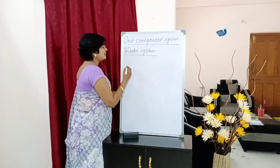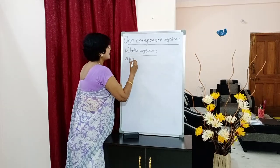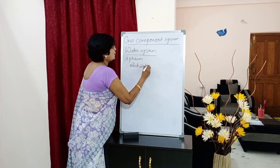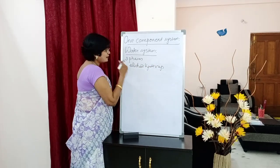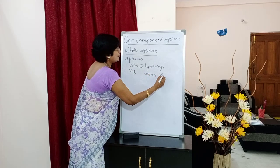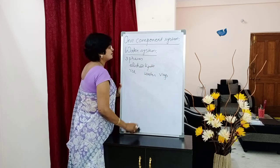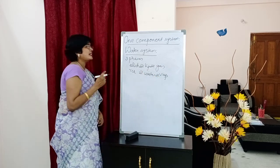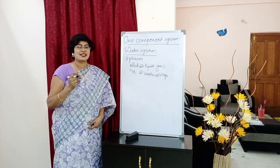We all know that water exists in three phases. What are these? Solid, liquid, and vapor. So the solid phase of water is ice, then water, and then vapor or gas. These are the three phases in which the water system can exist.